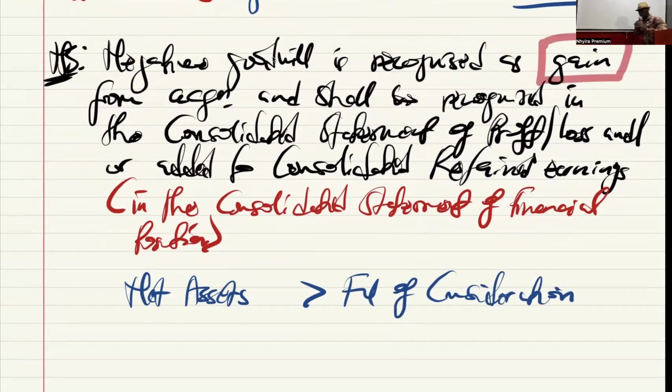So if we are preparing consolidated profit or loss, it will come as a line item on the face of the consolidated statement of profit or loss. If we are preparing consolidated statement of financial position, we will add it to the group retained earnings, because the group retained earnings will end up on the face of the consolidated statement of financial position.